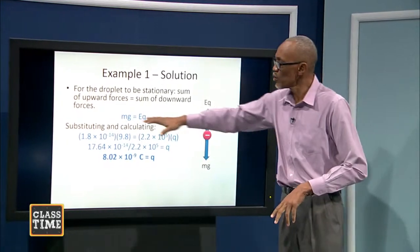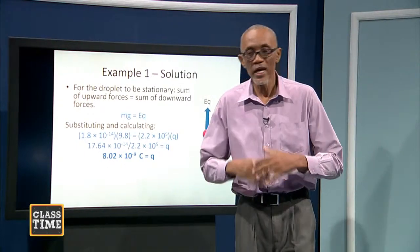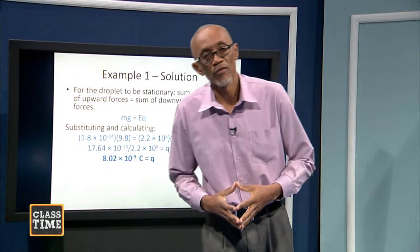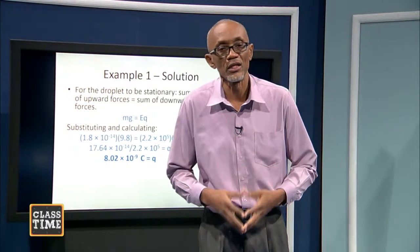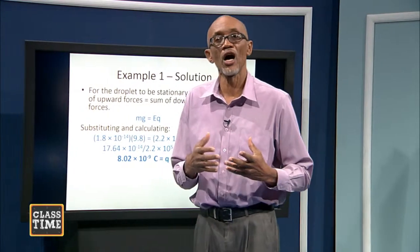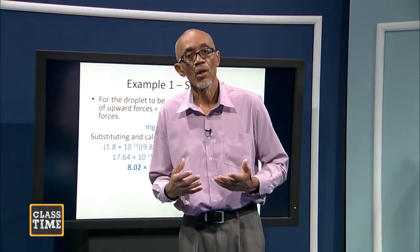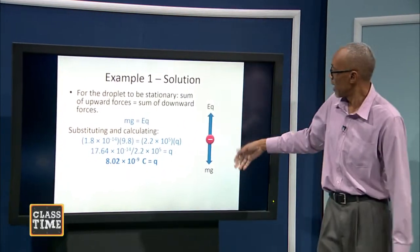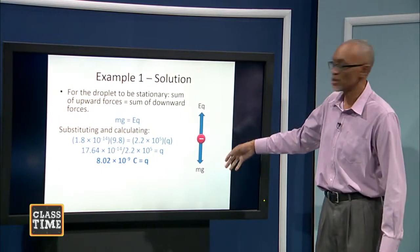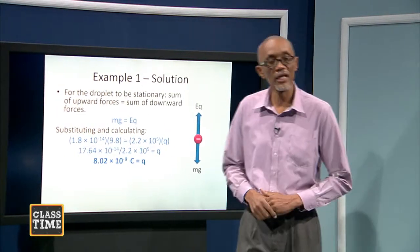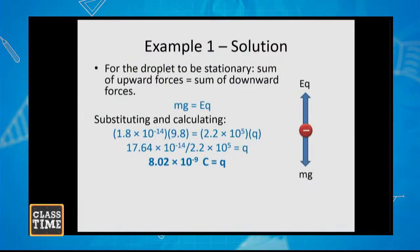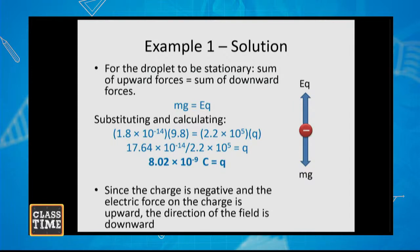Here we've used a principle from mechanics: if an object is stationary or moving with constant velocity, then the resultant force on it is zero. That's a mechanics principle we have brought over here, and we see that nothing is new under the sun — we use the same mechanics principles even when dealing with electrostatic phenomena. Since the charge is negative and the electric force on the charge is upward, the direction of the field is downward.